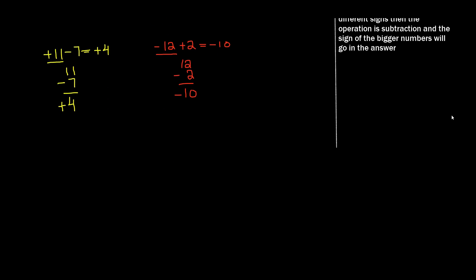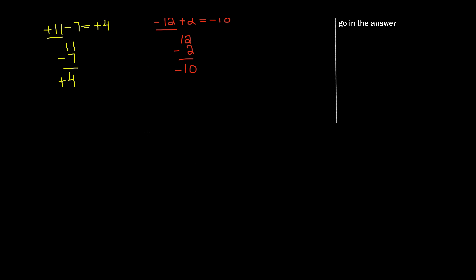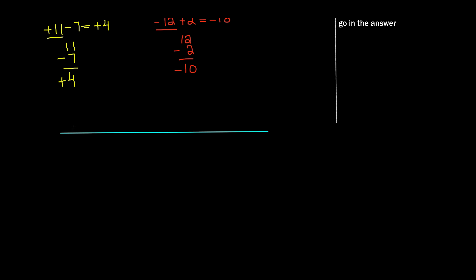Now I'm going to scroll down and tell you what's really happening behind the scenes. I'll draw a number line — just give me a second. We have zero in the middle, then the whole numbers going out to the right: 1, 2, 3, 4, 5. And the negative numbers go to the left: negative 1, negative 2, negative 3, negative 4.